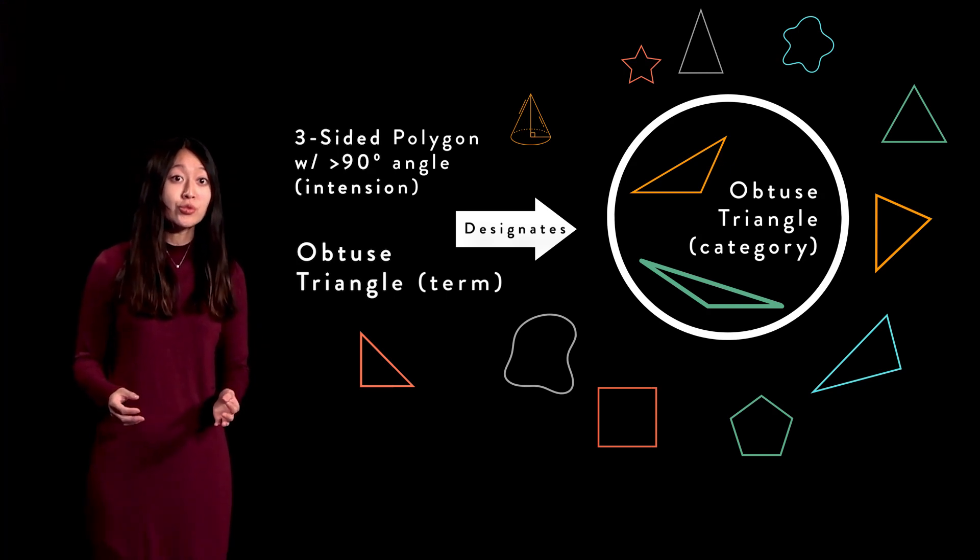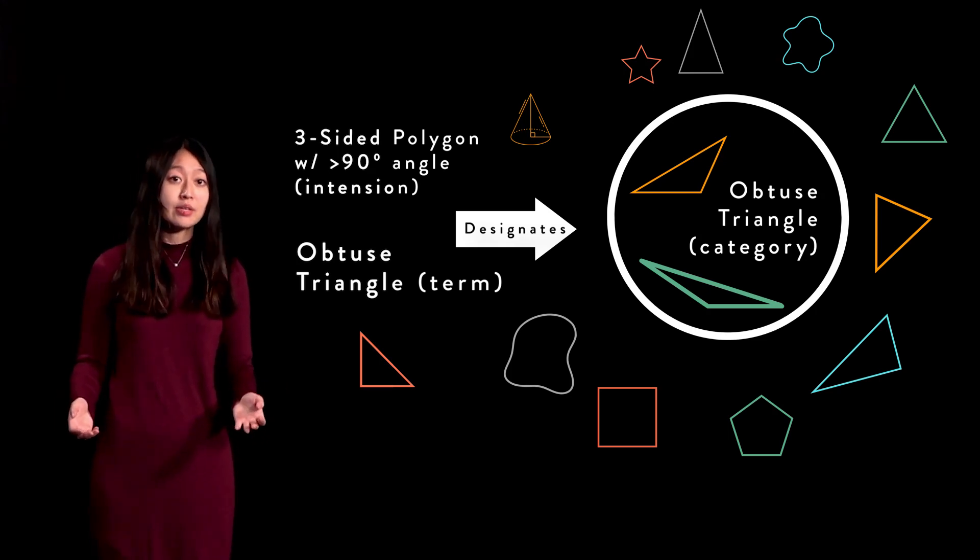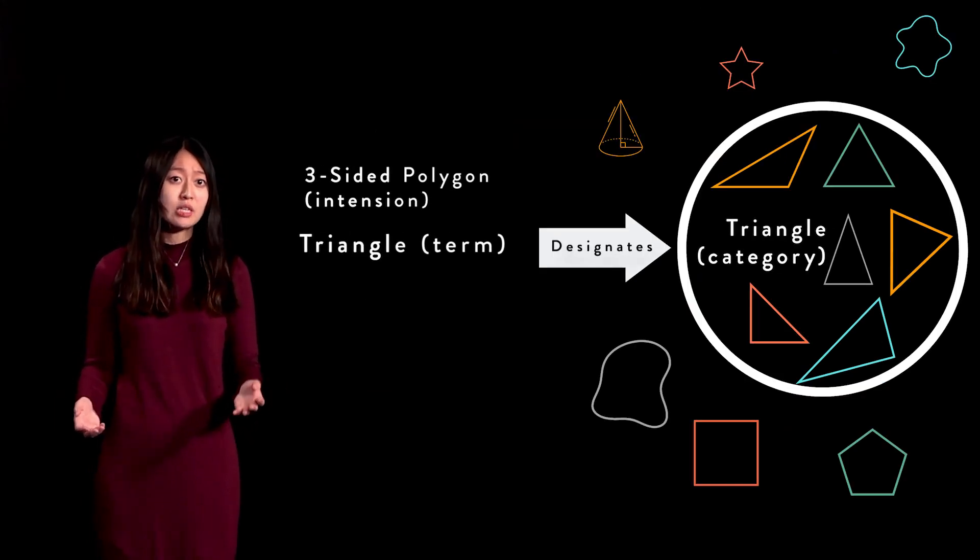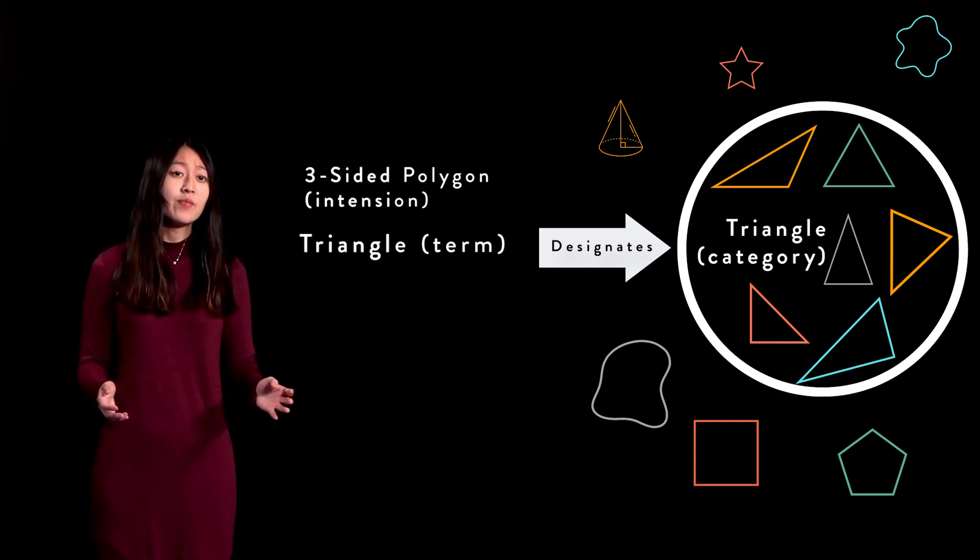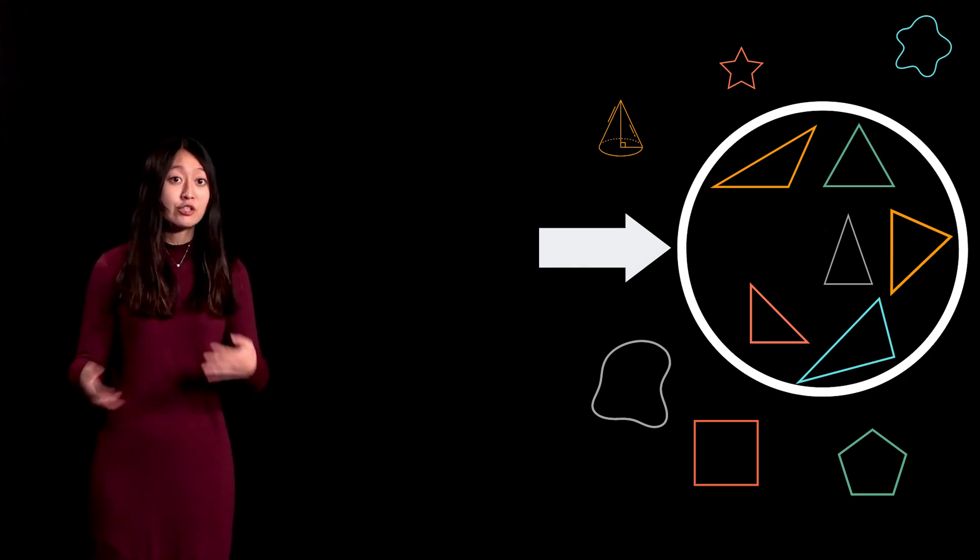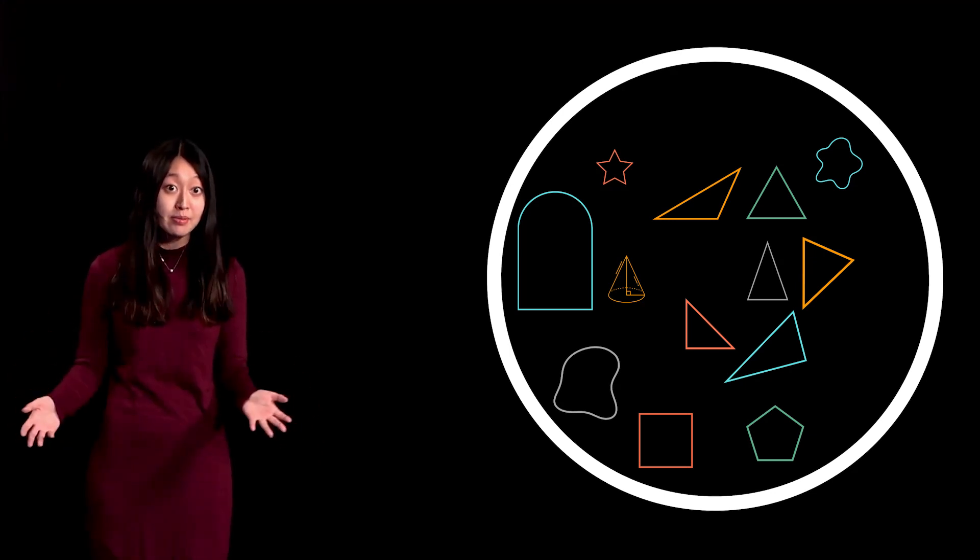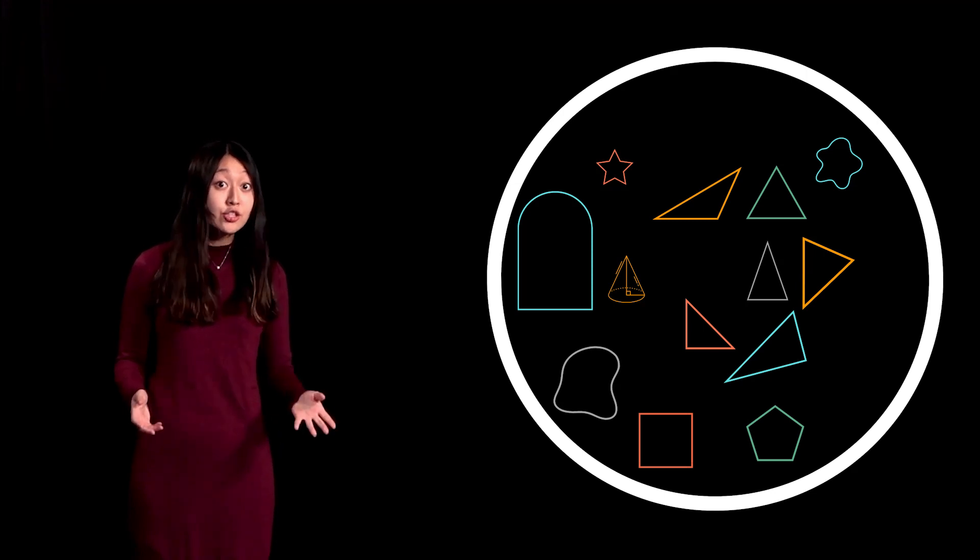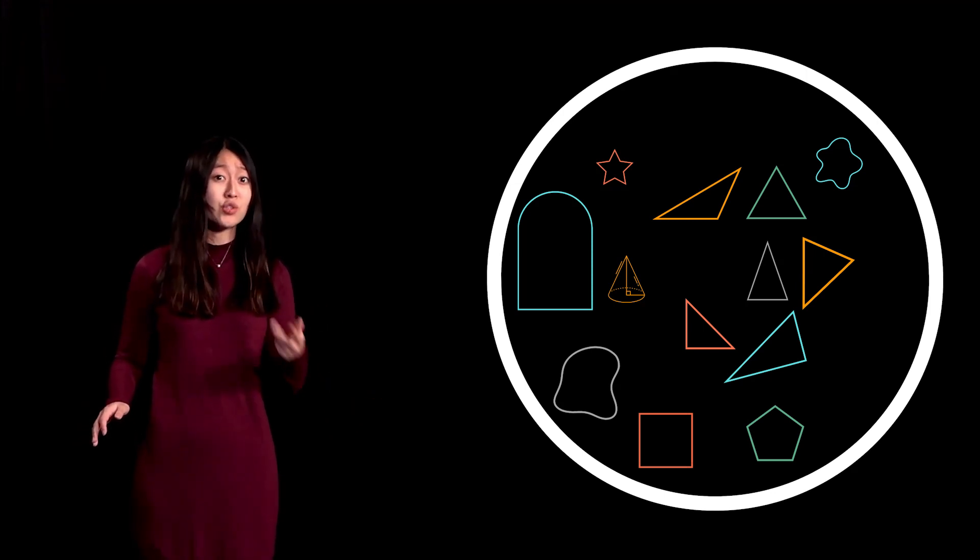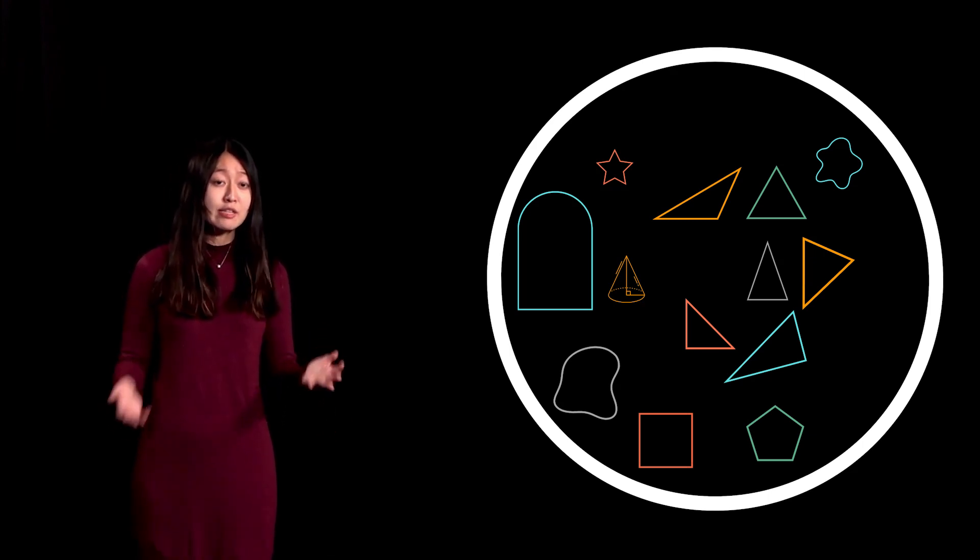Intension is very important because it plays a crucial role in our definitions. When we define something, we want to choose a definition that is as specific as possible to fit the intuitive extension we associate with the term. Why is this the case? Take the triangle example again. If we were to define triangle with a definition that is broader than the generally accepted intension of triangle, then we would have non-triangles in the category of triangle. For instance, if we define triangle as a geometric shape, then squares would be members of the category triangle because squares have the property of being geometric shapes. This diagram shows that our definition slash intension is way too broad because now squares, stars, and trapezoids are in the category triangle. Therefore, we know that we need to make our definition or intension more specific.